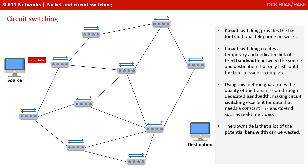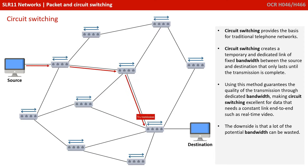Circuit switching provides the basis for traditional telephone networks. It creates a temporary and dedicated link of fixed bandwidth between the source and destination that only lasts until the transmission is complete.